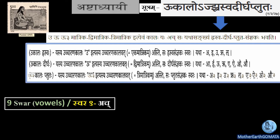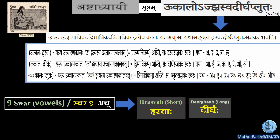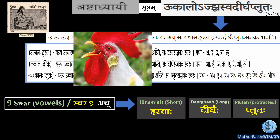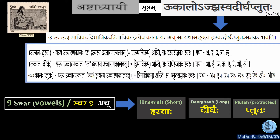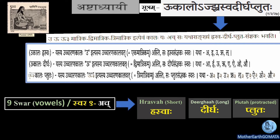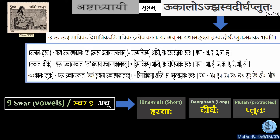Maharishi Panini beautifully explains how the pronunciation timing of these Swaras works by giving the following example: in the morning we hear the crowing of the rooster. He compares the timing required for the pronunciation of these Swaras to the call of the rooster. The call of the rooster is 'ko ko ko ko ko ko'. If you hear the sound, you will notice the sound of Swar is present in the crowing of the rooster, so Swar is being emphasized here.